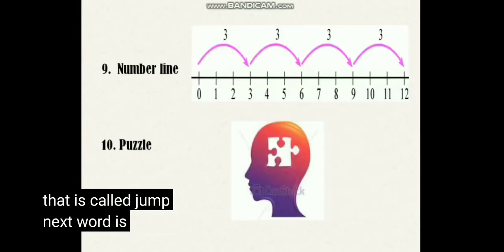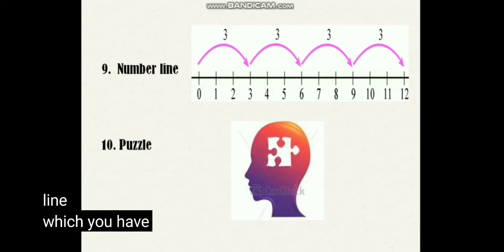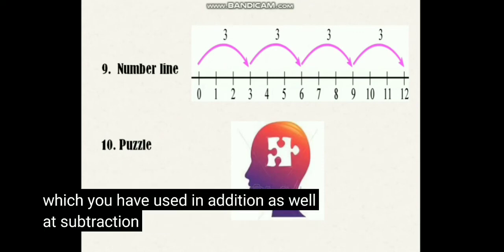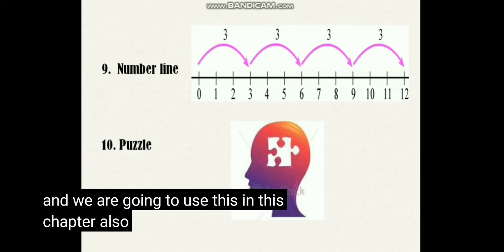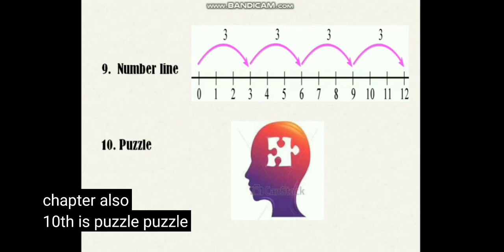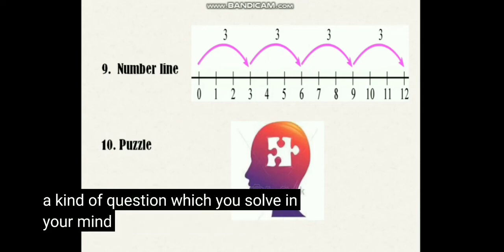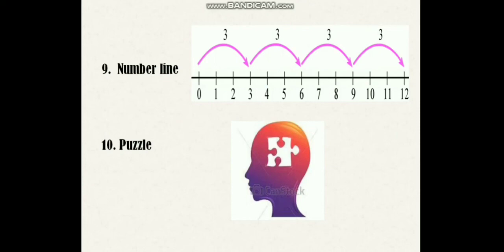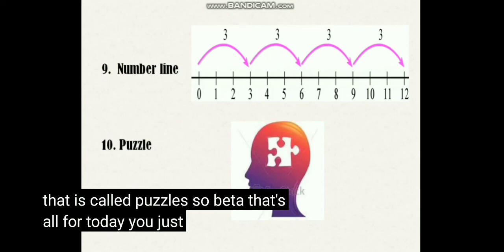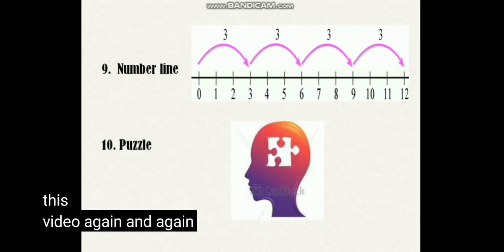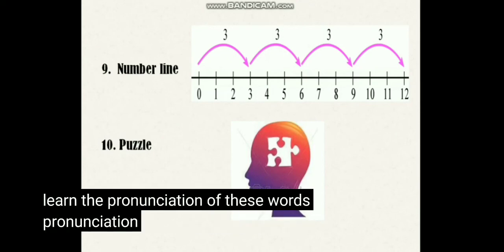Next word is Number Line — this is the number line picture which you have used in addition as well as subtraction, and we are going to use it in this chapter also. Tenth is Puzzle — a puzzle is a kind of question which you solve in your mind; यह जिसमें आपको सोचना पड़ता है, उसे solve करना पड़ता है — that is called a Puzzle. So that's all for today. You just have to watch this video again and again and learn the pronunciation of these words. Pronunciation is very important.